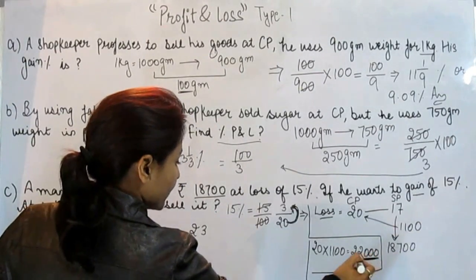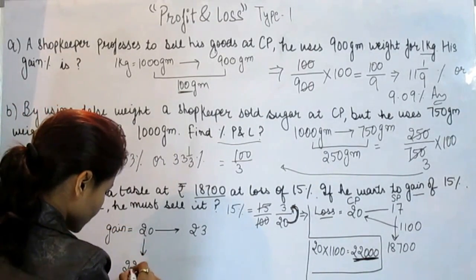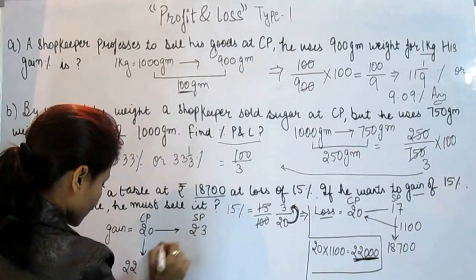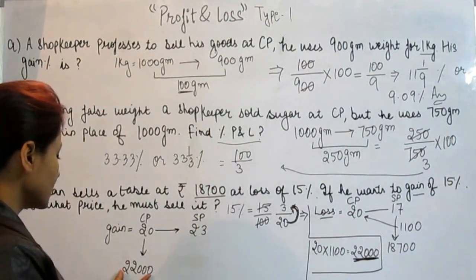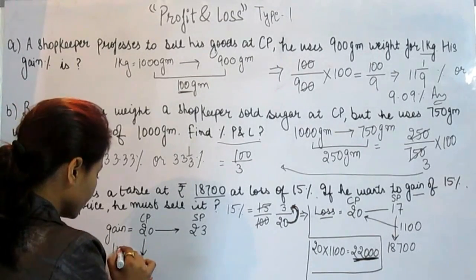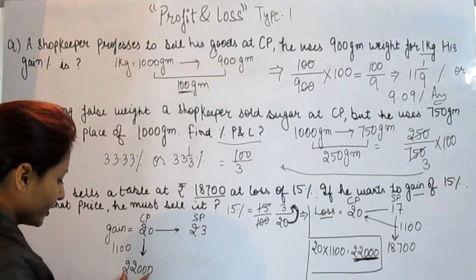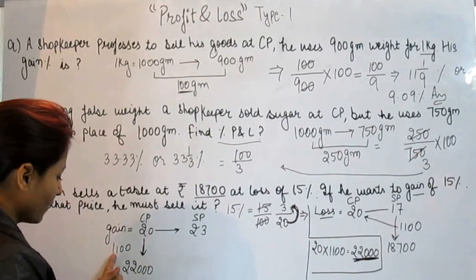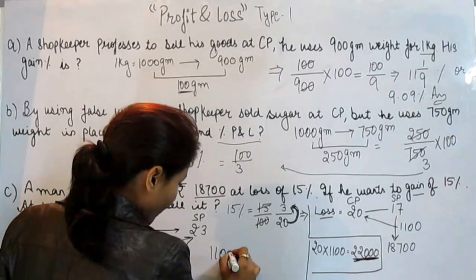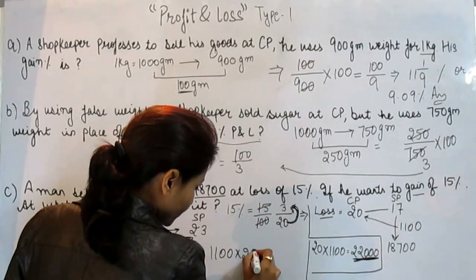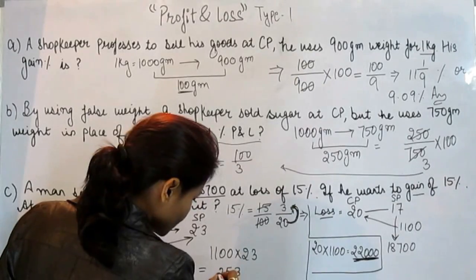What is his cost price? That was 22,000. 22,000 is 1100 times 20. So now multiply 1100 with 23. What do we get? We get 25,300.